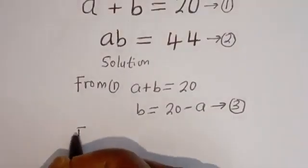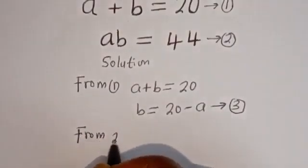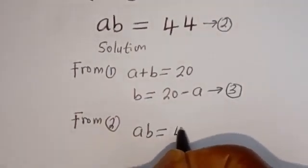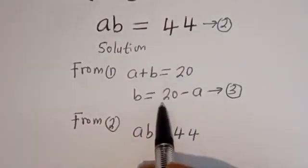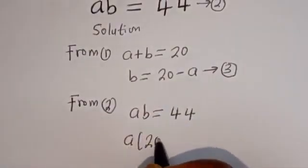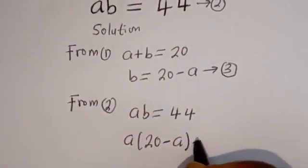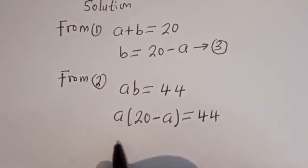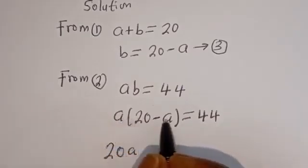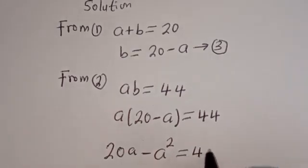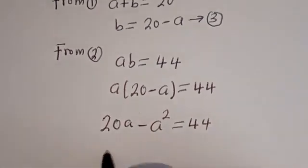From equation two, ab is equal to 44. We can substitute for b: a multiplied by bracket (20 minus a) is equal to 44. Opening the bracket: a multiplied by 20 gives 20a, and a multiplied by minus a gives minus a squared, so 20a minus a squared equals 44.